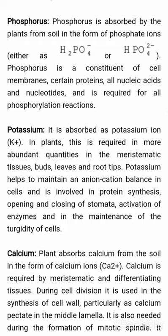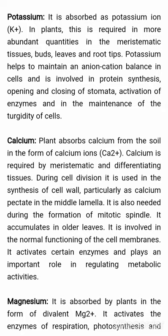Phosphorus is absorbed by plants from soil in the form of phosphate ions, either as H₂PO₄⁻ or HPO₄²⁻. Phosphorus is a constituent of cell membranes, certain proteins, all nucleic acids and nucleotides, and is required for all phosphorylation reactions. Potassium is absorbed as potassium ions. In plants, it is required in more abundant quantities in the meristematic tissues, buds, leaves and root tips. Potassium helps to maintain an anion-cation balance in cells and is involved in protein synthesis, opening and closing of stomata, activation of enzymes, and in the maintenance of turgidity of cells.